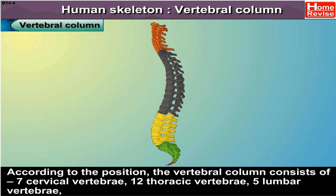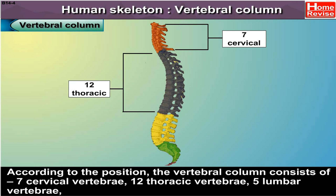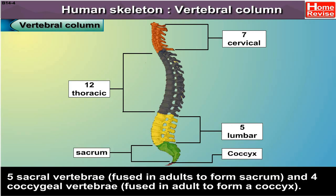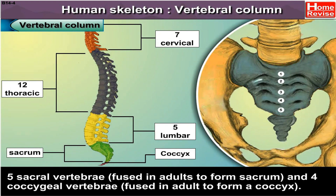According to position, the vertebral column consists of 7 cervical vertebrae, 12 thoracic vertebrae, 5 lumbar vertebrae, 5 sacral vertebrae which are fused in adults to form a sacrum, and 4 coccygeal vertebrae which are fused in adults to form a coccyx.